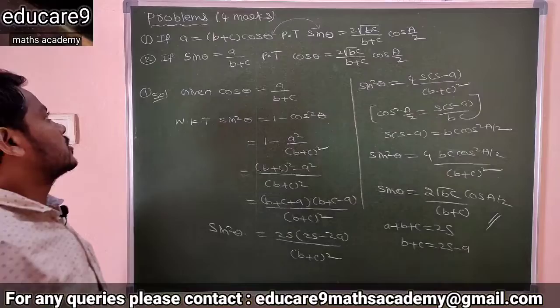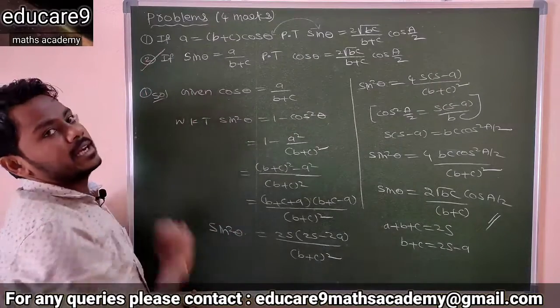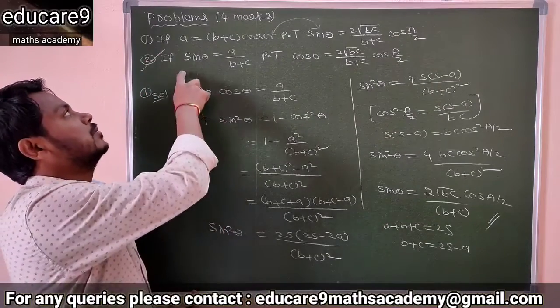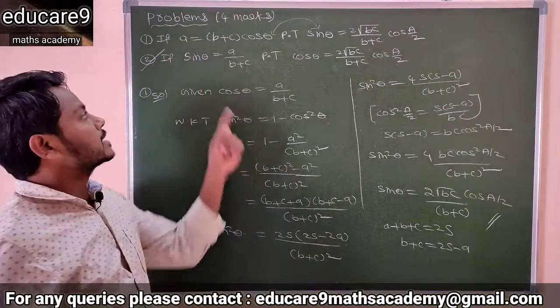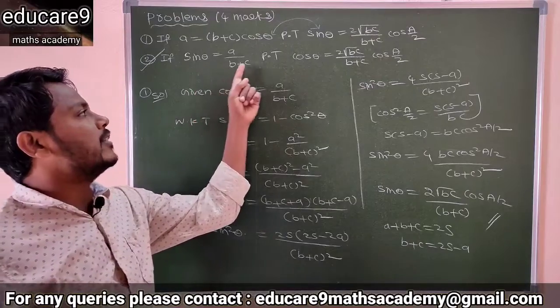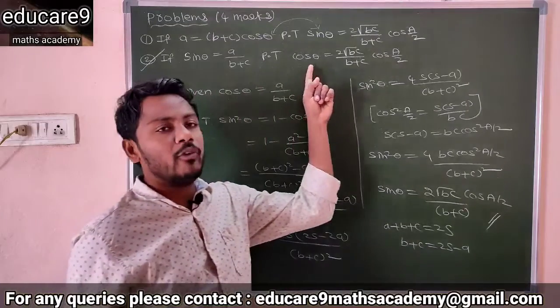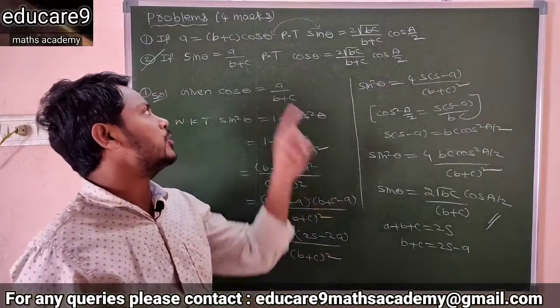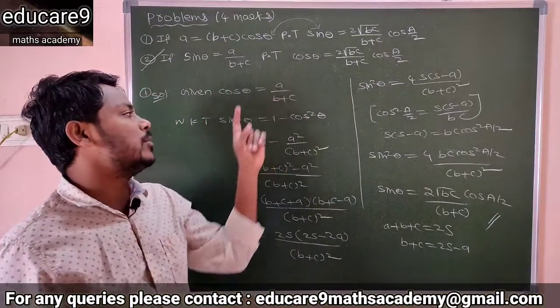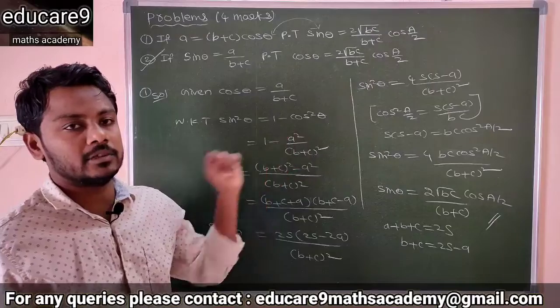Similarly you can solve the second one. This is similar to question number 1 — your sin θ is given and you need to find cos θ. So again you have to use the same identity.